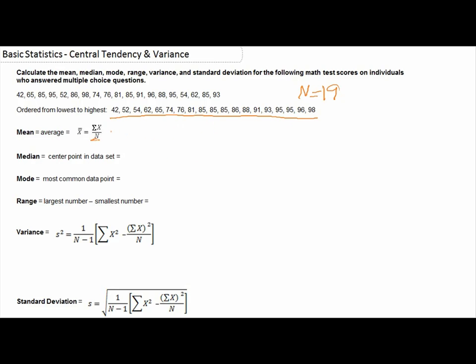Now to calculate our average we need to know what the sum of all of these x's is, which I have already calculated. The sum of all of these numbers is 1503. We will put that on the top of our equation, and on the bottom we will put our n which is 19. So we have 1503 divided by 19, and once we divide we get the average of 79.11.